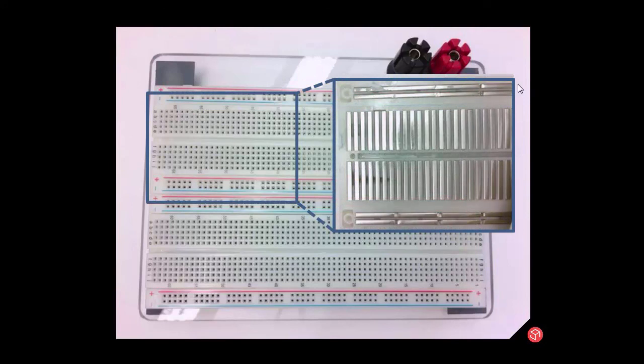You will see long metallic strips under the power rails to connect all their pins together, and short metallic segments under each five pinholes in the component section to connect them together.